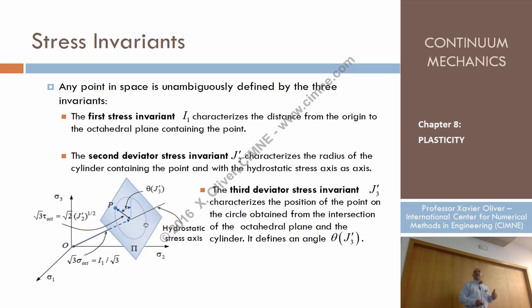Now, if I know J'2, I am able to compute tau octahedral, so that distance. So now I'm able to identify not only the octahedral plane, but also in the octahedral plane, which is the circle of radius defined by J'2, at which the stress state remains.